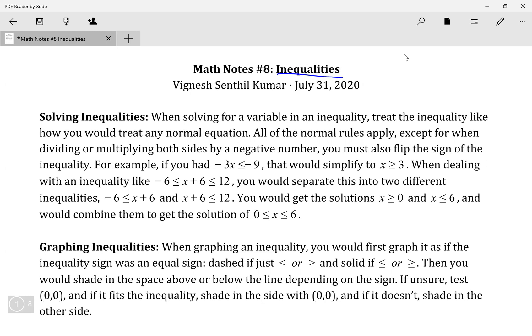However, one exception is that when you're dividing or multiplying both sides by a negative number, that is when you have to reverse the sign. For instance, if you have negative 3x is less than or equal to negative 9, then you would simplify this to x is greater than or equal to 3. What I did was I divided both sides by negative 3, and because I did that, I just flipped the sign.